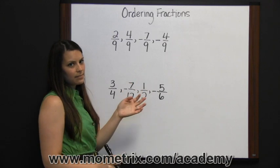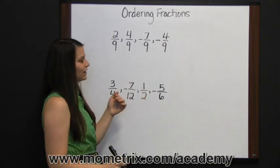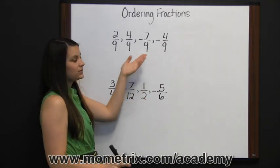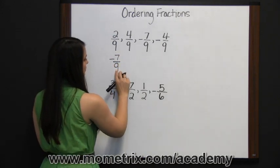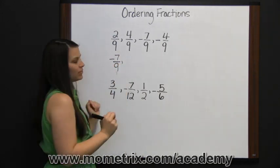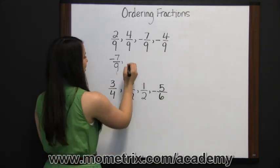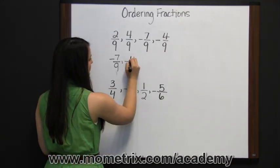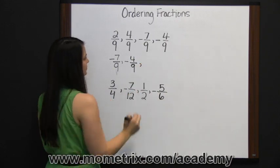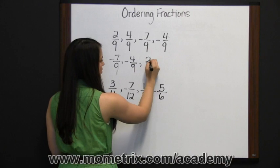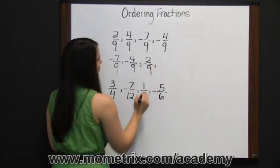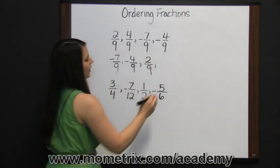The smallest number would be our biggest negative number, negative seven ninths. Our next number would be our next negative number, negative four ninths. Next biggest would be our first positive number, two ninths. And finally, four ninths.